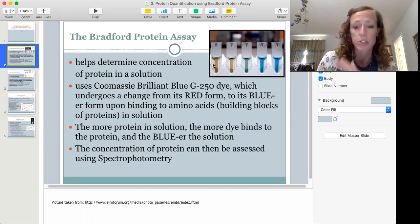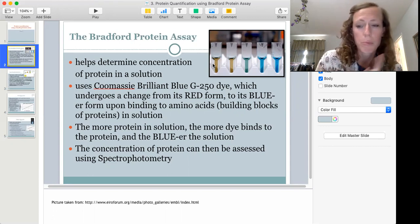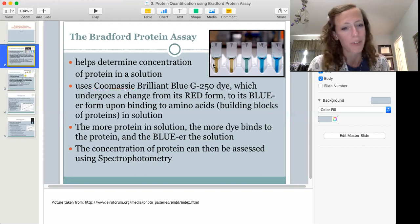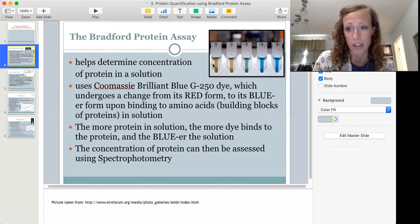That indicates that whatever that dye is mixed with in that cuvette, it has a lot more protein than the cuvettes that are less blue or more red brown. So the way that this works is that when the dye binds amino acids, which are the building blocks of proteins, it undergoes a change. And that change is observable by the fact that it changes color. The more protein in solution, the more dye will bind that protein and the bluer the solution will be. So we can readily observe this, but we're not going to make it that simple. What we want to do is put a number to it, assign the absorbance value to this particular concentration of protein. And we do that using spectrophotometry.